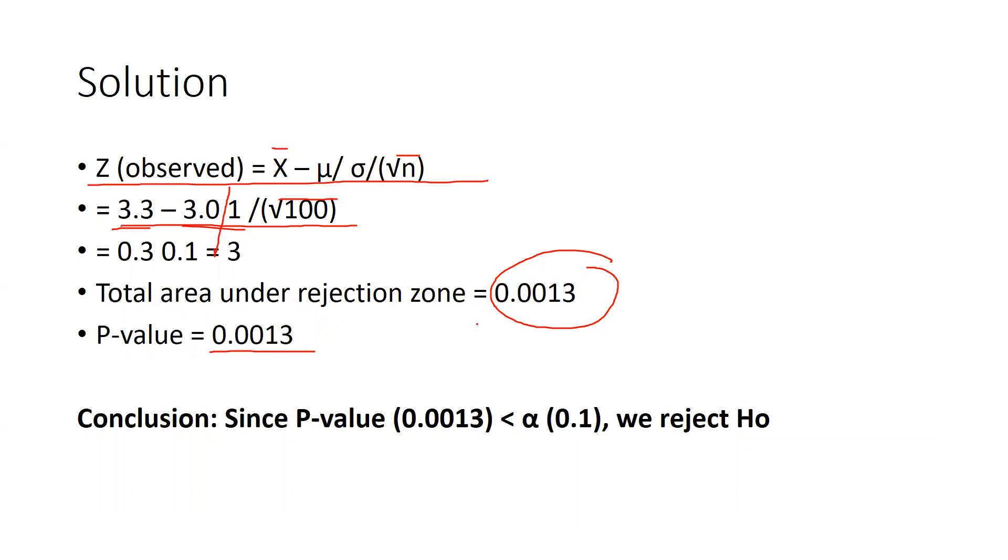At the one you can see 0.0013 because this value it is at the 90 percent confidence interval that is less than 0.1. So ultimately we reject null hypothesis.